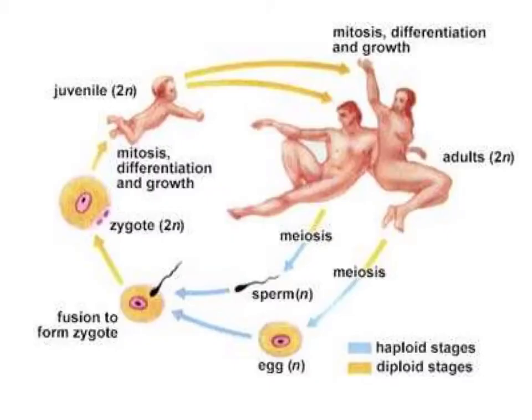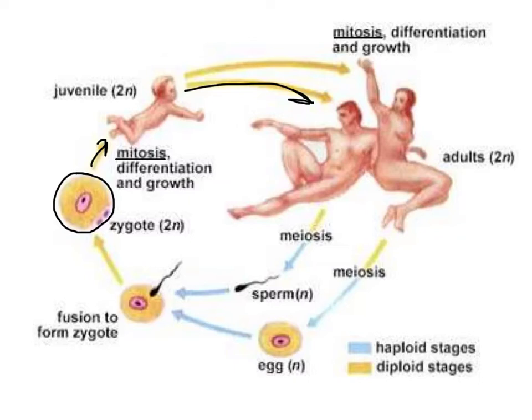The meiosis occurring in our gonads is very special. Most of the time when cells divide in our body, they divide by mitosis. That's how we get from being one cell big to being many cells big — all by mitosis, a division which copies all of the DNA and makes sure that all of the DNA ends up in the daughter cells.